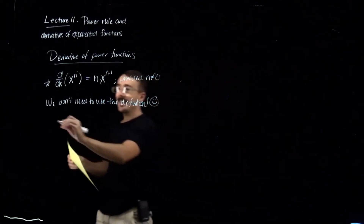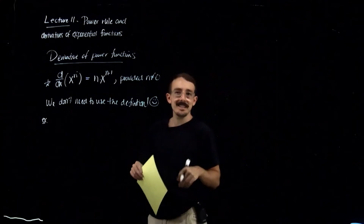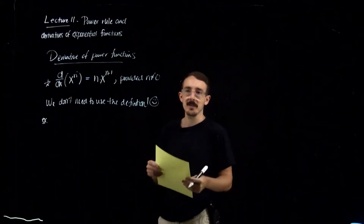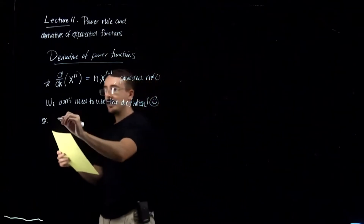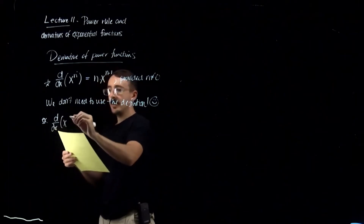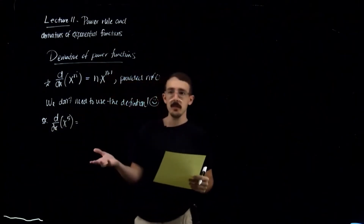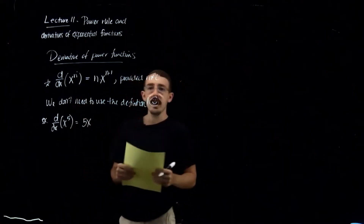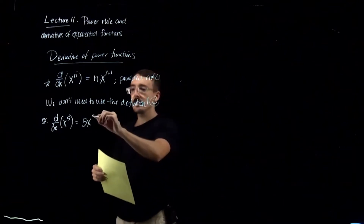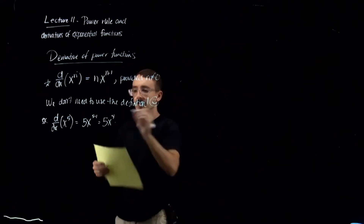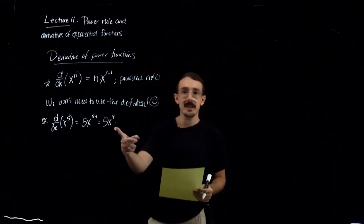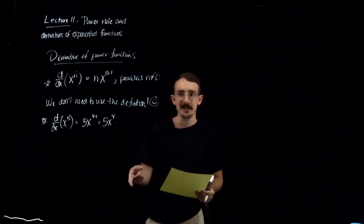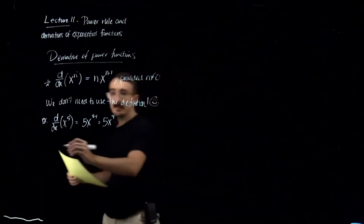So we don't need to use the definition anymore to find derivatives. My first example: let's take the derivative of x^5. Following our rule, you take the power 5, bring it in front, and subtract 1 from the power so it becomes 4. So the derivative is 5x^4. That is the answer you would get using the long definition — this is much quicker.